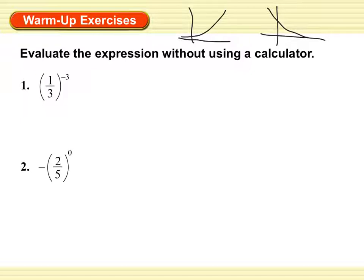Evaluate the expressions without using a calculator. Remember, this is just our review. That negative right there, we need to make it a positive, which flips your fraction. I can say 3 over 1, but 3 over 1 is silly, so we're just going to say 3 to the 3rd power is, in fact, 27.